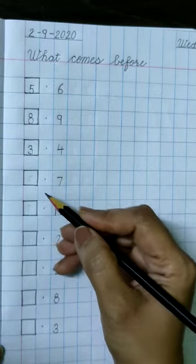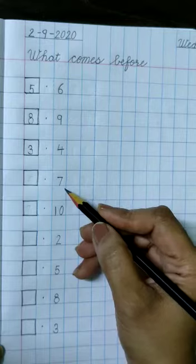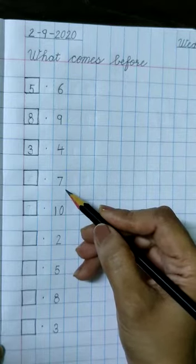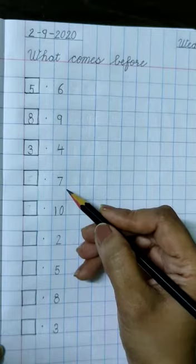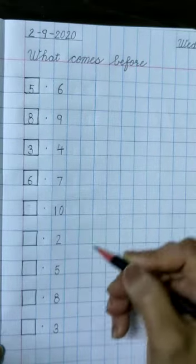Again make a box. Then put a dot and write number 7. What comes before 7? 6-7. 6 comes before 7. So write 6 in this box.